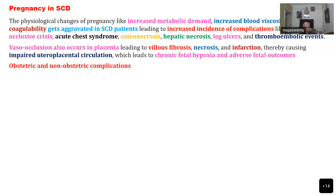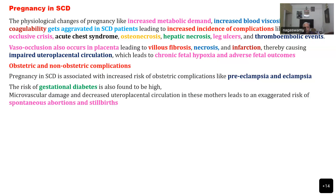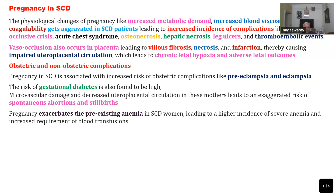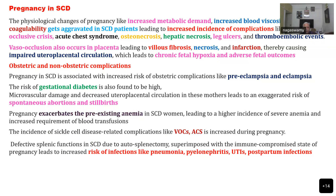Coming to the obstetric and non-obstetric complications in these patients, there is an increased risk of pre-eclampsia and eclampsia. Some reports say they can develop gestational diabetes, though some deny that. Microvascular damage and decreased uteroplacental circulation results in spontaneous abortion, and stillbirth is very common. There can also be an exacerbation of pre-existing anemia due to physiological anemia of pregnancy.